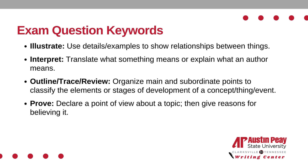To interpret is to translate what something means or explain what an author means. To outline, trace, or review is to organize main and subordinate points to classify the elements or stages of development of a concept, thing, or event. And to prove is to declare a point of view about a topic, then give reasons for believing it.